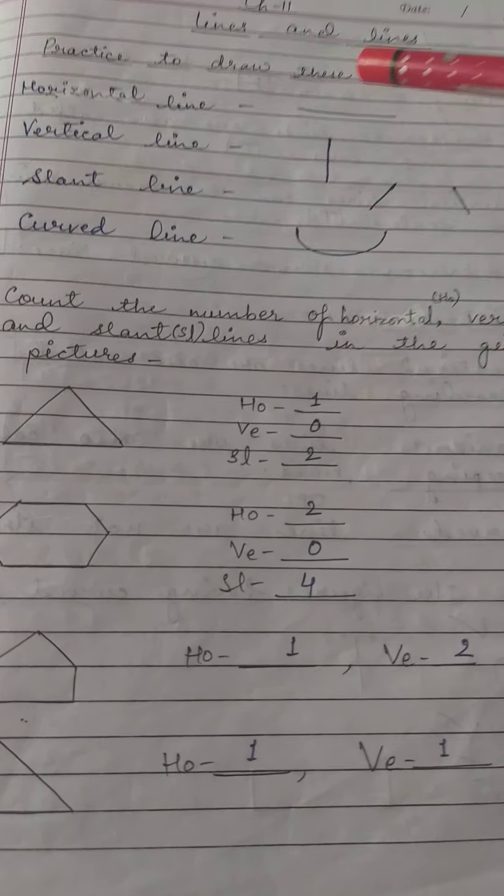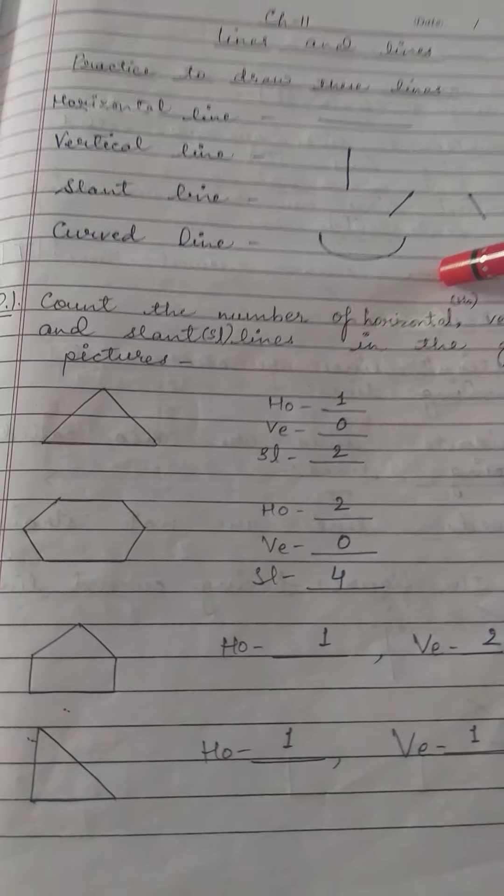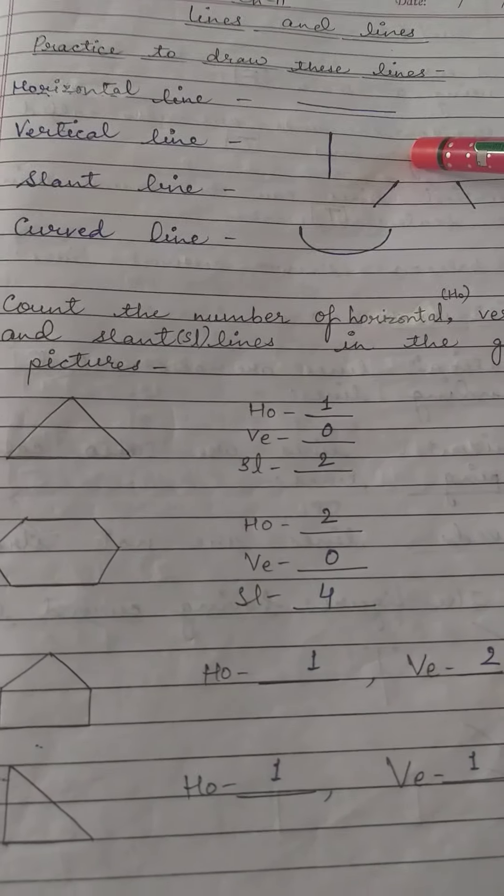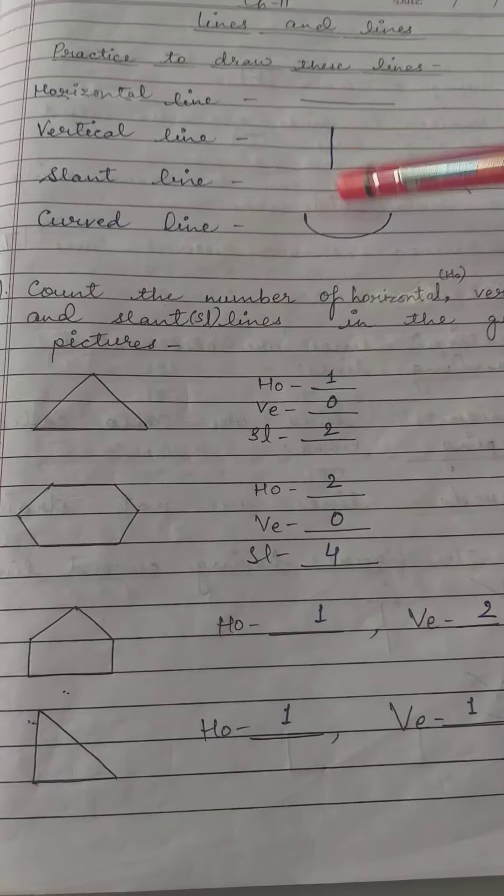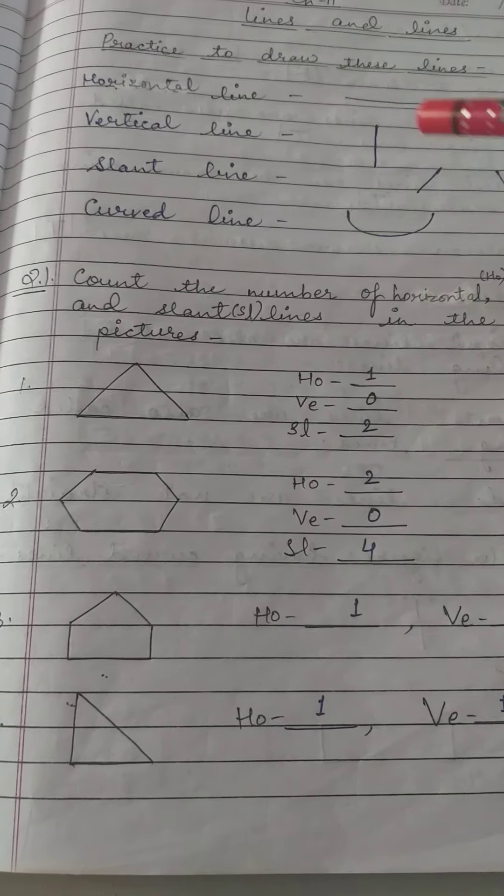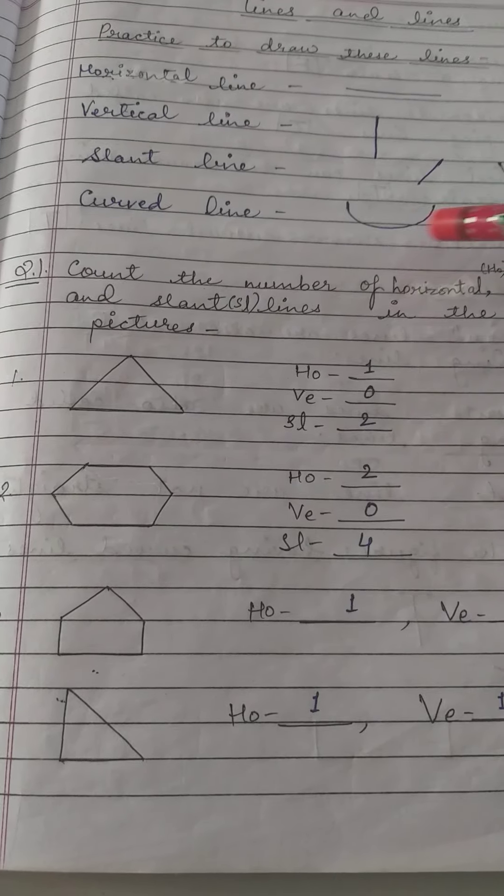So straight lines have three categories: horizontal, vertical, and slant. Horizontal is a sleeping line, vertical is a standing line. Then there is curved line.